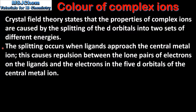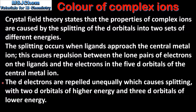The splitting occurs when ligands approach the central metal ion. This causes repulsion between the lone pairs of electrons on the ligands and the electrons in the 5 d orbitals of the central metal ion. The d electrons are repelled unequally, which causes splitting with 2 d orbitals of higher energy and 3 d orbitals of lower energy.